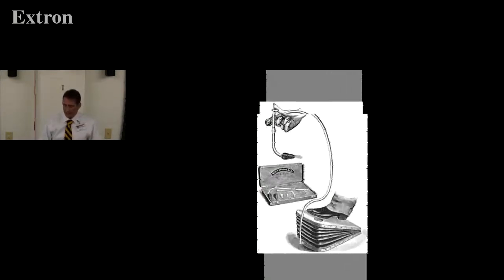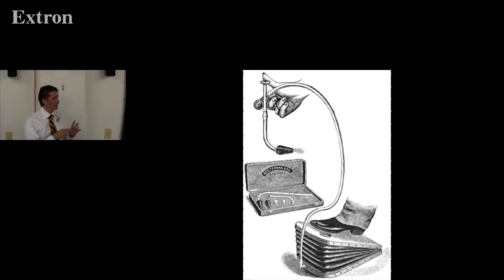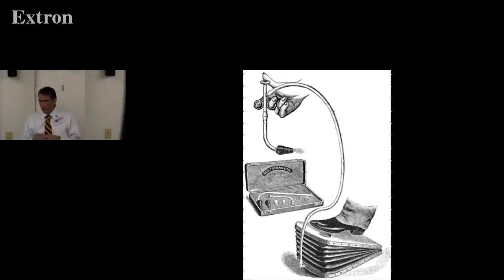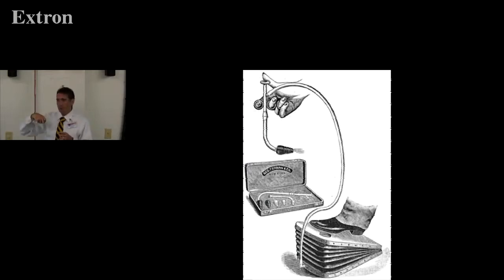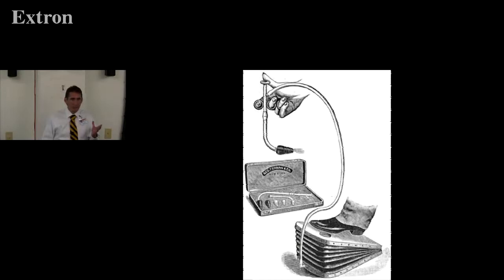The history of one-lung anesthesia goes back to 1893. A guy named Fell invented a device, and then O'Dwyer refined it. They demonstrated this at the International Congress as a means of ventilating patients — it looked like a jet ventilator. They would hold it over the glottis, stomp on the bellows, and shoot air down into the trachea to ventilate patients.